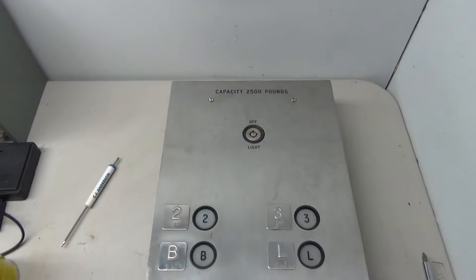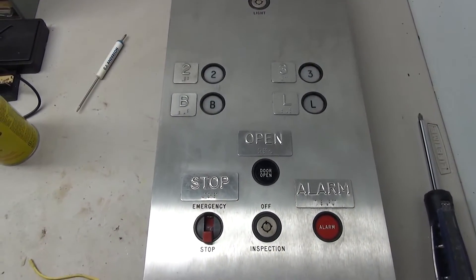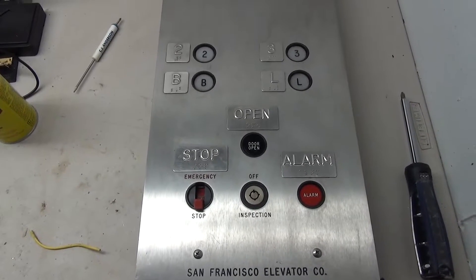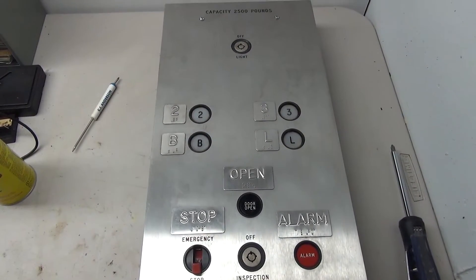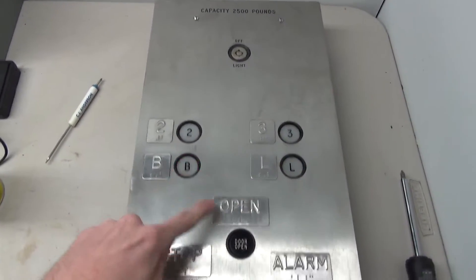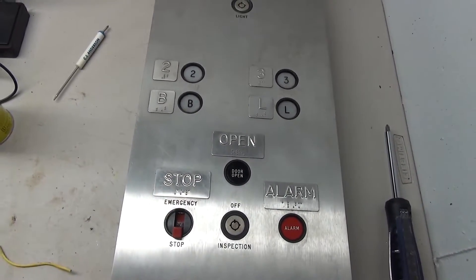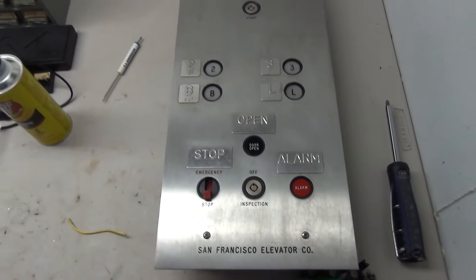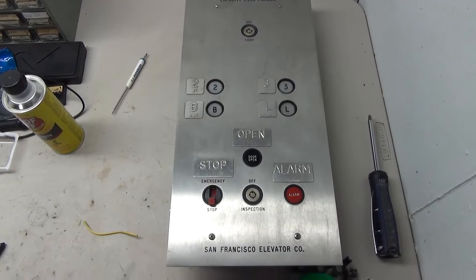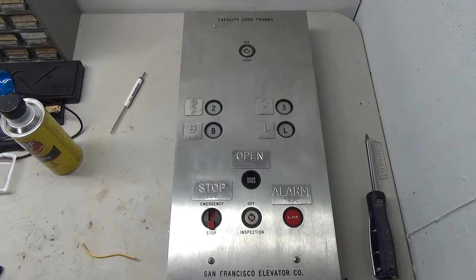That pretty much concludes the work I'm doing on this panel. This wasn't as in-depth or detailed - I just wanted to give you guys a little overview of what is on the inside of this button and what I did to it to make it work. You can see now all of the buttons light up, these buttons press very nicely, and the stop switch works perfectly. I hope you guys enjoyed watching me restore and wire up this awesome Payne San Francisco Elevator Company elevator fixture. Thank you guys for watching and we'll see you in the next one.